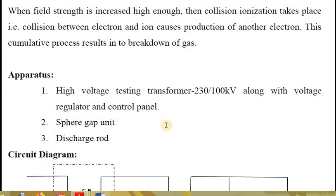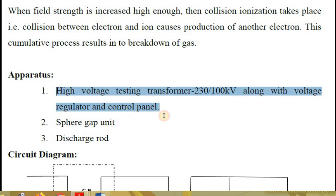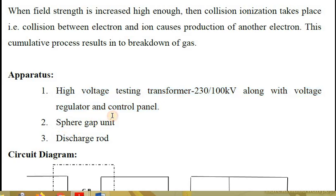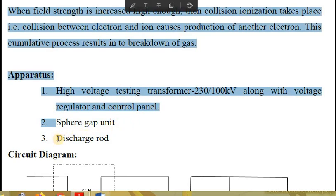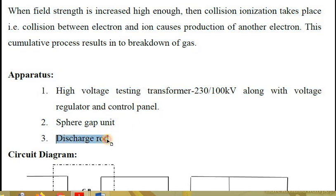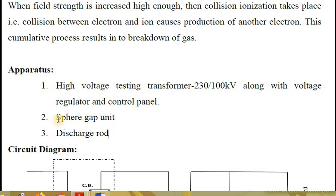For this experiment, we need some apparatus. The apparatus includes the high voltage testing transformer with a range of 230 volt to 100 kilovolt, along with the voltage regulator and control panel. We need the sphere gap unit and the discharge rod. The function of the discharge rod is that whenever the spheres get charged to the applied voltage, we use the discharge rod to discharge them.